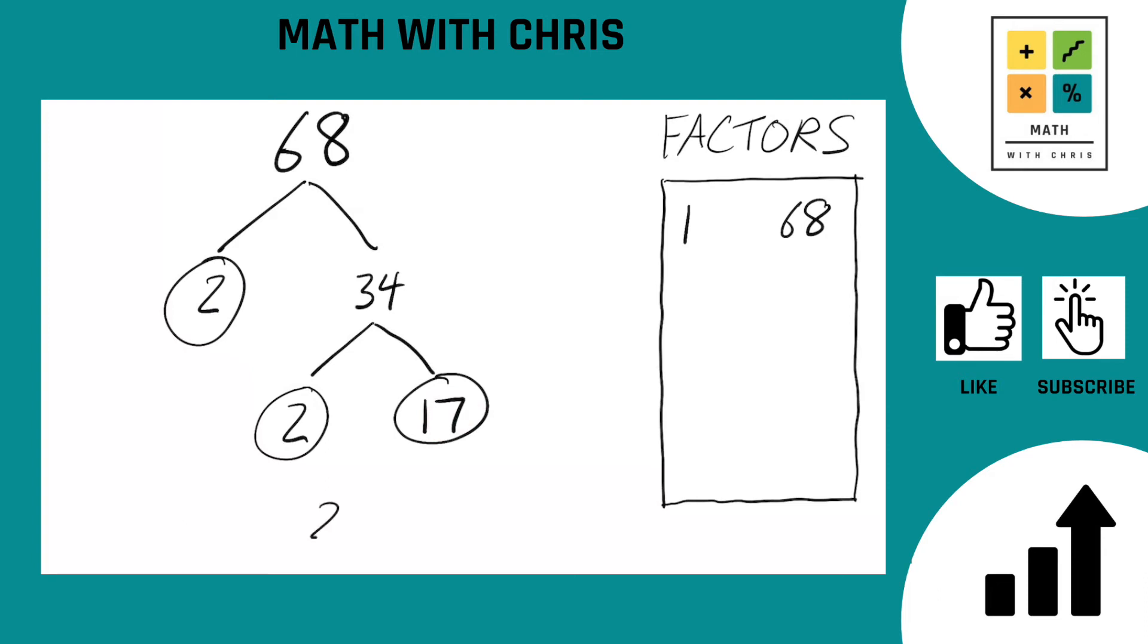If we multiply those out, 2 times 2 times 17, that does indeed give us 68, which is what we are going for. So yeah, nice.